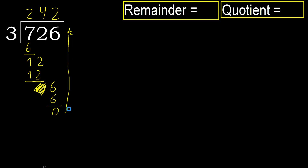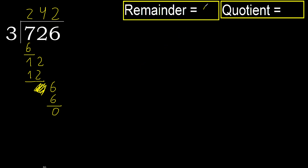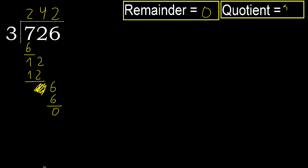That is not a number. Therefore, finish it. Ok. 0. Therefore, 726 divided by 3 is 242.